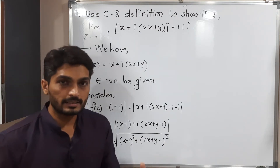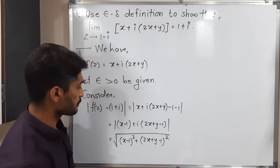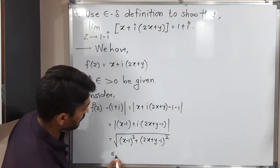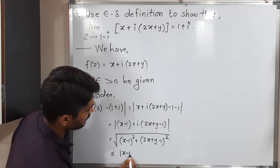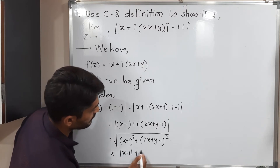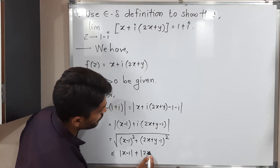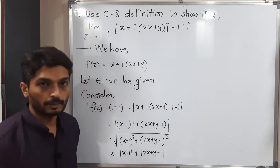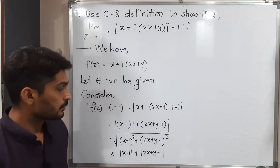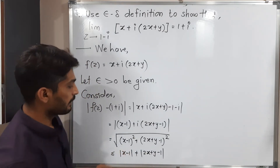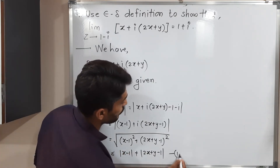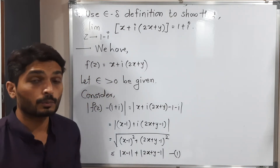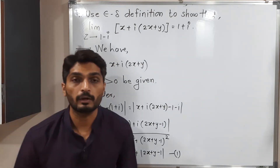If we take the terms separately, this is less than or equal to mod x minus 1 plus mod 2x plus y minus 1. This is a very important inequality — let us call it inequality number 1.